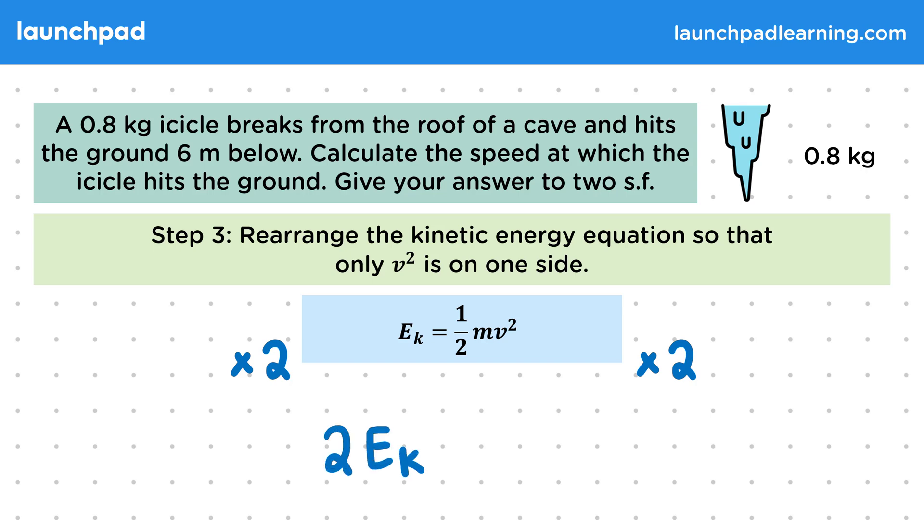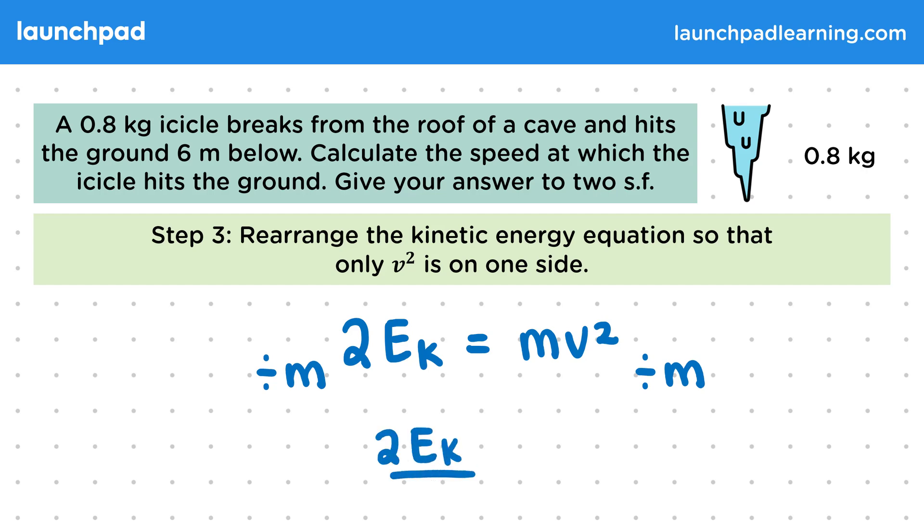That gives us 2EK is equal to mv squared. We can then divide both sides of the equation by m. That gives us 2EK divided by m is equal to v squared, or v squared is equal to 2EK over m.